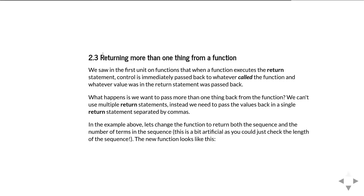We saw in the first unit on functions that as soon as you hit a return statement in the function, control is passed back to whatever called the function, and whatever value is in the return statement is passed back, but no other lines of code after that will happen. So what happens if we want to pass more than one thing back from the function? We can't use multiple return statements because as soon as you hit the first return statement, control is passed back and there's no chance for it to run any of the other return statements.